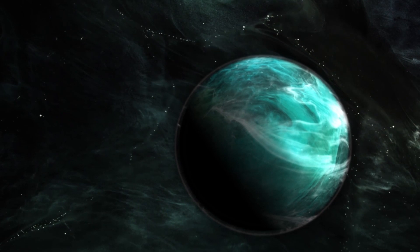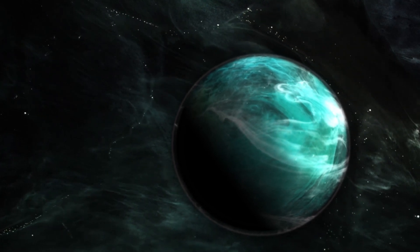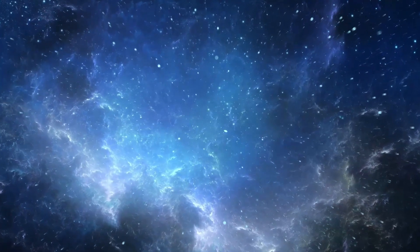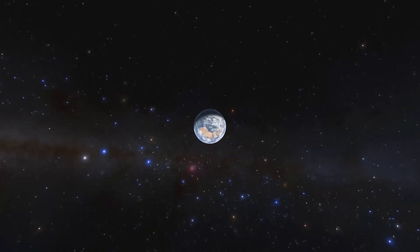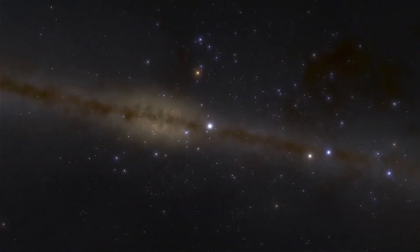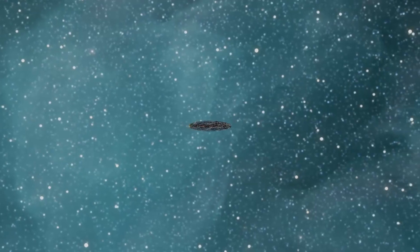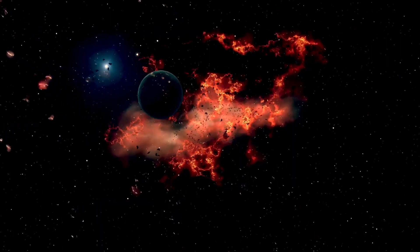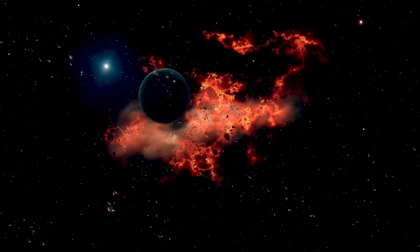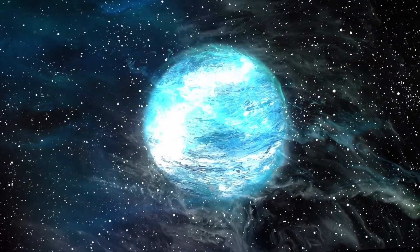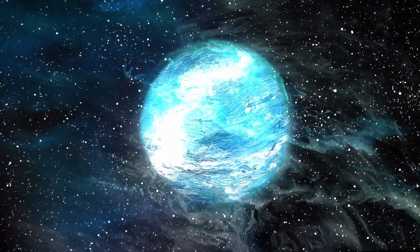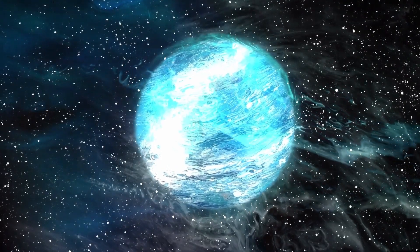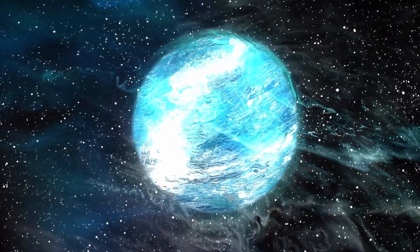OGLE 2005 BLG 390LB is a super-Earth exoplanet. The planet is located 21,530 light years from Earth, near the center of the Milky Way, making it one of the most distant planets known. Its distance from the star and the star's relatively low temperature means that the planet's likely surface temperature is around minus 220 degrees Celsius, making it one of the coldest known planets.